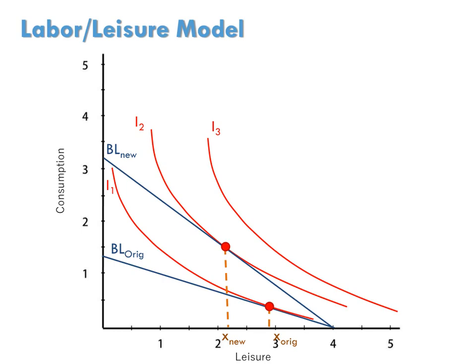To derive the demand for anything, we need to change that thing's price holding all else constant. So, to derive the leisure demand curve, we must change first the price of leisure. The wage rate is that price of leisure.